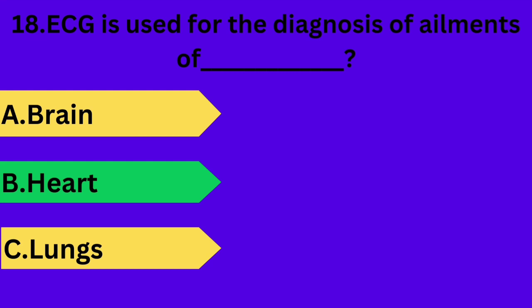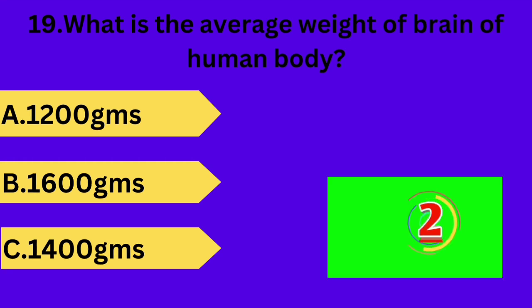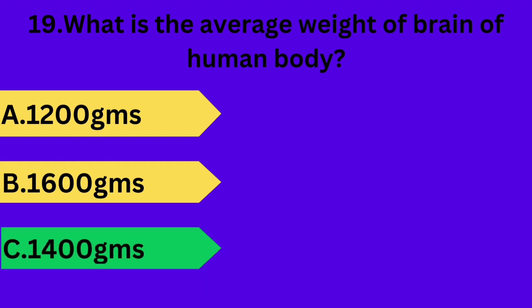And next question is: what is the average weight of the brain of the human body? Option A: 1200 grams. Option B: 1600 grams. Option C: 1400 grams. Your time starts now. Answer is option C: 1400 grams.